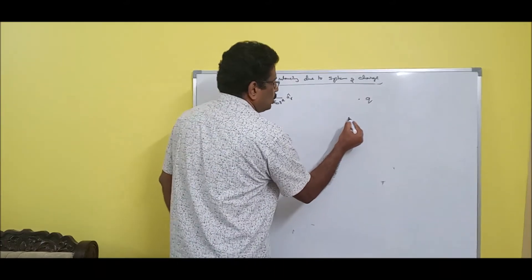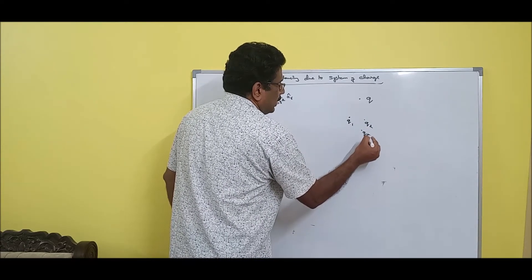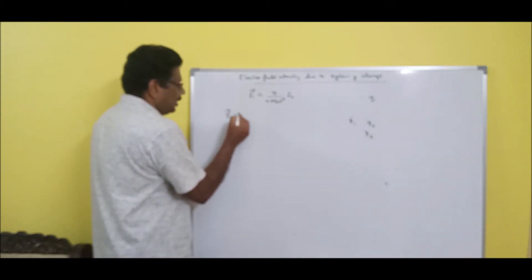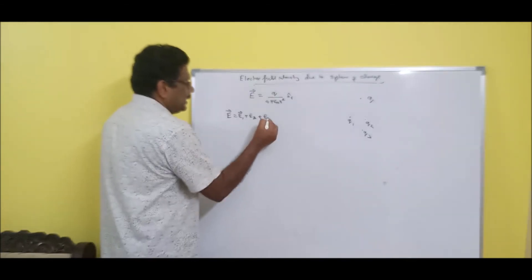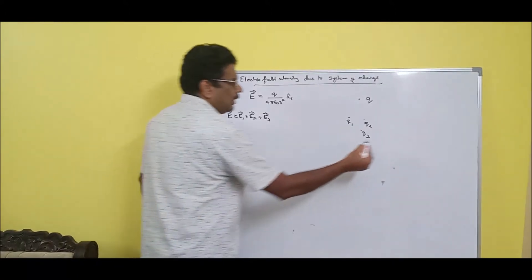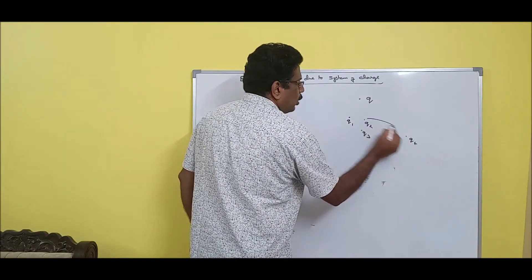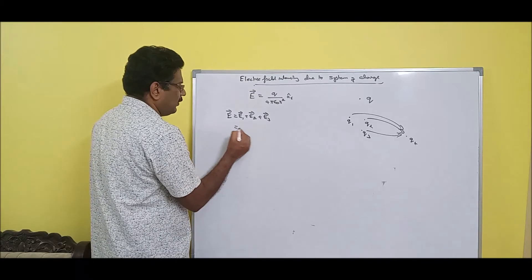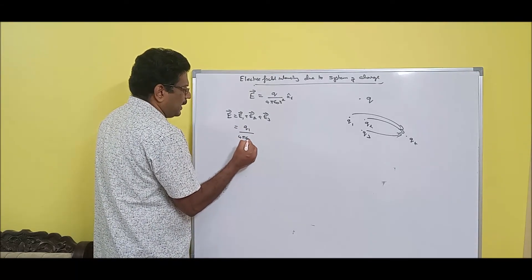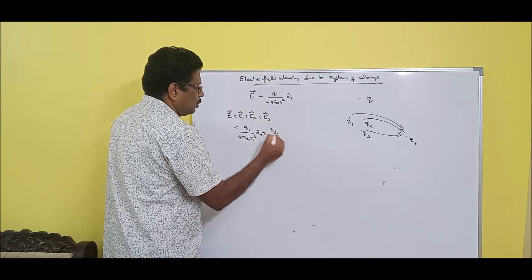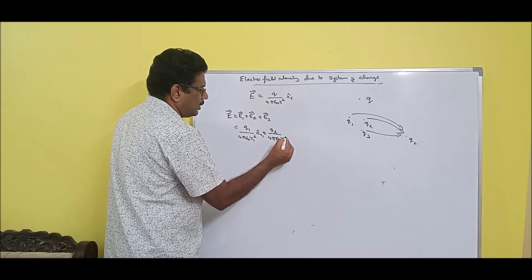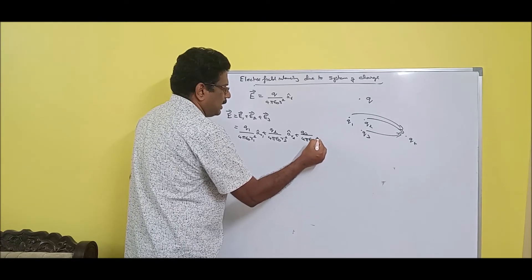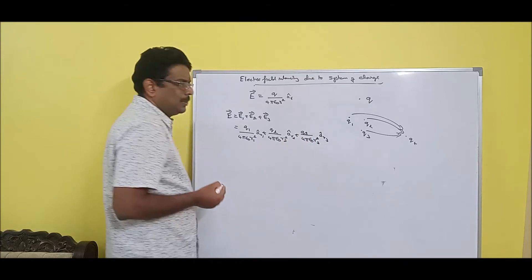Now assume there are three charges Q1, Q2, Q3. The total electric field intensity is E = E1 + E2 + E3, because three charges produce three electric fields. Written out fully: E = Q1/(4·pi·epsilon-naught·R1-squared)·a-R1-cap + Q2/(4·pi·epsilon-naught·R2-squared)·a-R2-cap + Q3/(4·pi·epsilon-naught·R3-squared)·a-R3-cap.